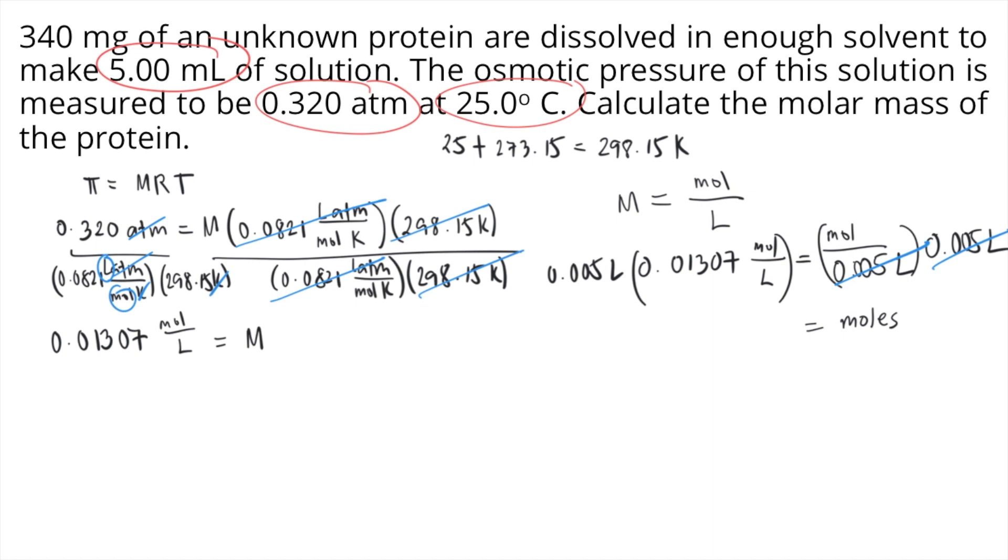On the left side, you can see the litres will cancel out. So what's left is the unit for moles, which is moles. Grab your calculator, 0.005 times 0.01307 equals 0.00006535 moles.